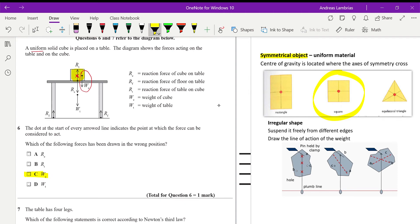And just for information if we had an irregular shape how do we find the center of gravity? We use the suspension method where we suspend the object from different edges. We draw the line of action of the weight in each case and then where the lines cross each other this is the center of gravity.